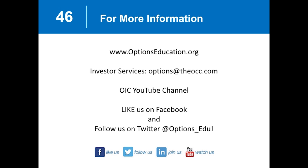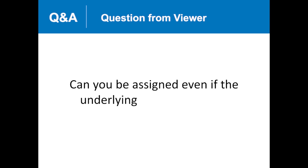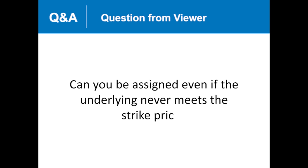Question: can you be assigned even if the underlying never meets the strike price? An option holder can exercise a contract regardless of where the underlying security is. It usually doesn't make financial sense to exercise an out-of-the-money options contract, though it does happen and is a rare occurrence. It's most likely to occur when the stock is trading exactly at or on either side of the strike price — we refer to that as pin risk, where the stock gets pinned right to the price of the options contract you have a position in.